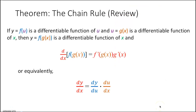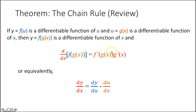First thing we're going to do is review the chain rule. We talked about this last time. This is what you do when you have a composite function and you're taking the derivative of that composite function. You take the derivative of the outer function and leave the inner function alone, then multiply by the derivative of your inner function. We'll do more examples today.